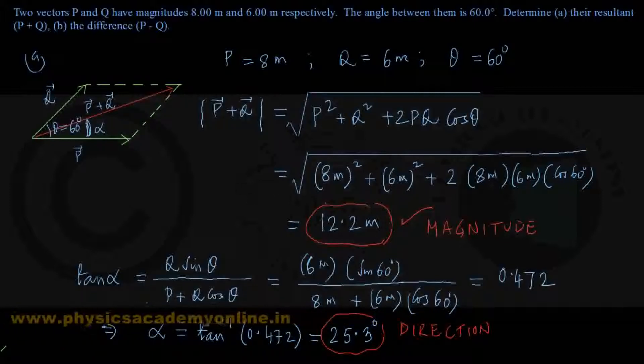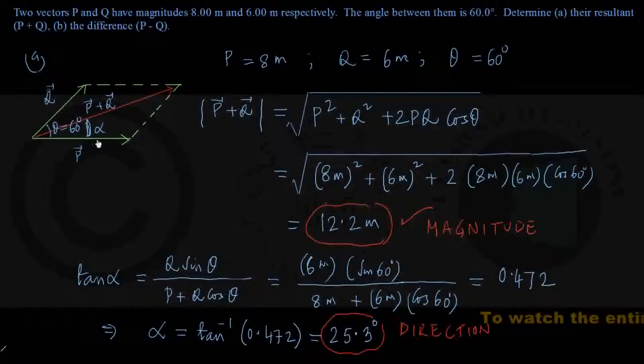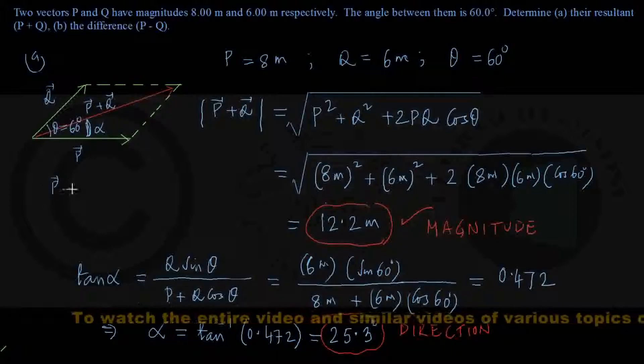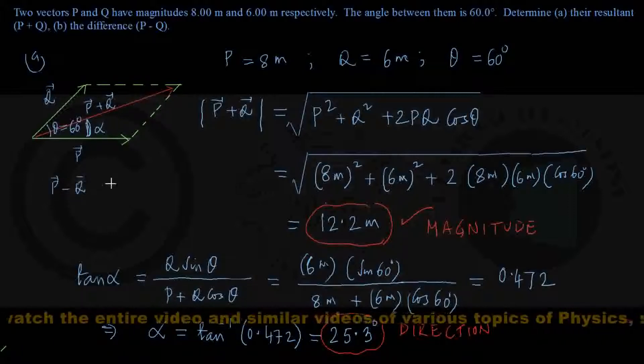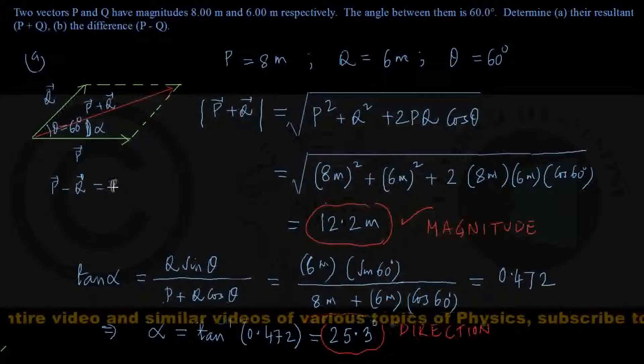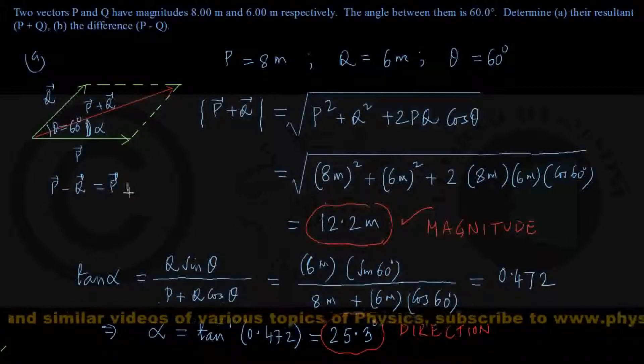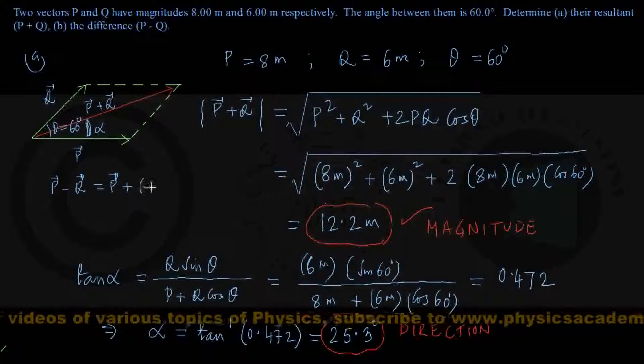In the second part, we're asked for the difference P minus Q, and we've learned the subtraction technique. P minus Q is actually P plus negative Q—you're adding P vectorially with negative Q.